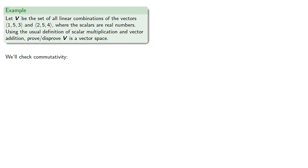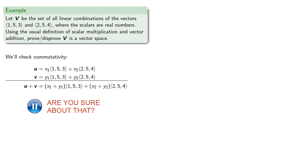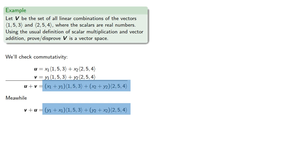We'll check commutativity. So u and v are linear combinations. Their sum is x₁(1, 5, 3) + x₂(2, 5, 4). And meanwhile, if we do the sum in the reverse order, we can compare the two and see that u + v is the same as v + u.